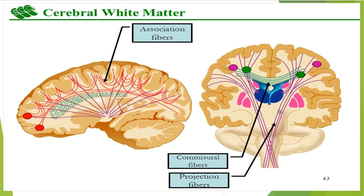The projection fibers are compacted within the internal capsule. As they leave it, they radiate to form the corona radiata, which eventually reaches the cerebral cortex. Here we can see the area of the internal capsule, with the lentiform nucleus comprising the putamen and globus pallidus, and the insular lobe.